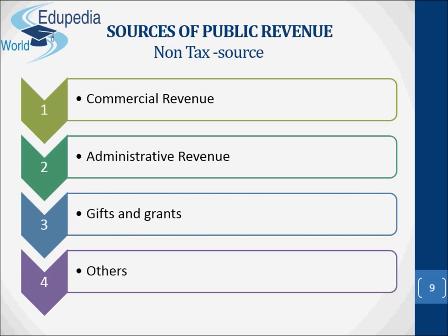Concerning special assessments, according to Professor Seligman, a special assessment is a compulsory contribution levied in proportion to the social benefit derived, to defray the costs of a specific improvement to property undertaken in the public interest. For example, when the government constructs a highway, the prices of plots on either side will naturally go up. Therefore, the landowners may be required to bear a part of the expenses incurred by the government. Such charges are called special assessments.